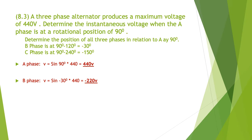B phase is just going to be sine of minus 90 times 440, giving us minus 220 volts. And finally C phase, sine minus 150 multiplied again by the max of 440, again minus 220 volts.